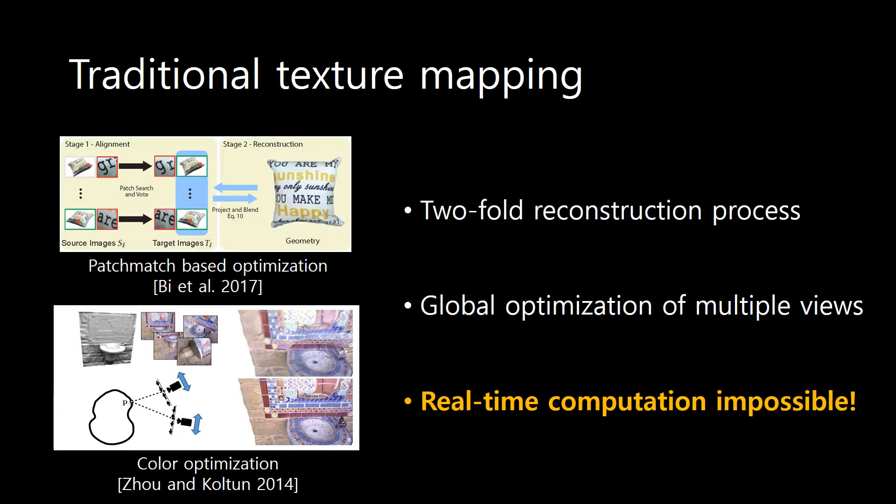Traditional texture mapping takes a two-fold reconstruction process — geometry and texture reconstruction — and it requires several minutes of computation for optimizing correspondences. Thus, it is not feasible for real-time application.